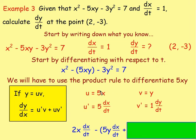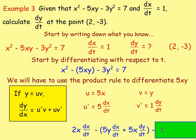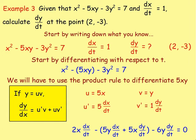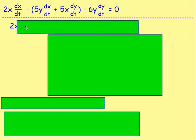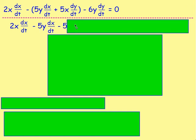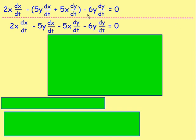Expanding the full differentiated expression: 2x dx/dt − 5y dx/dt − 5x dy/dt − 6y dy/dt = 0. The 3y² term differentiates to 6y dy/dt (brought in because we differentiate y with respect to t), and differentiating 7 gives 0. Removing brackets, we keep 2x dx/dt, subtract 5y dx/dt, subtract 5x dy/dt, and subtract 6y dy/dt equals 0. Remember, we want to find dy/dt at the point (2, −3).